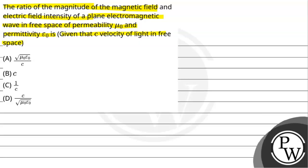As per the question, we need to calculate the ratio of magnitude of electric field to that of magnitude of magnetic field, while given mu naught permeability in free space and epsilon naught permittivity in the free space and c velocity of light in free space.